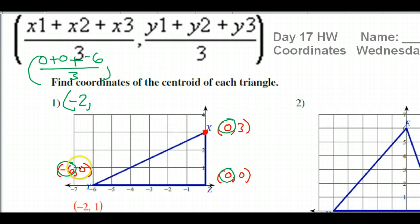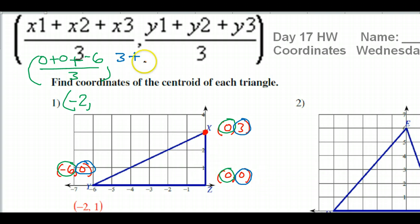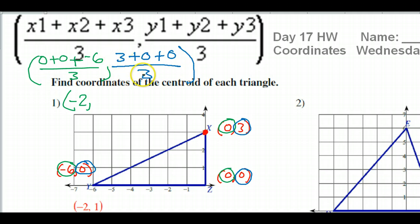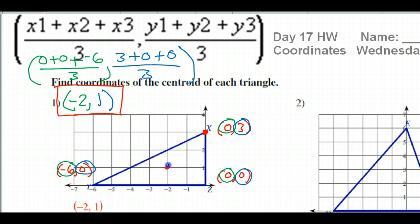Now let me switch to blue for the y-values. I've got y-values of 3, 0, and 0 from points X, Y, Z. So I find the average: (3 + 0 + 0) / 3. The zeros go away, leaving 3 over 3, which is 1. So the coordinates of my centroid are (-2, 1), which should be plotted right here at negative two, comma one.